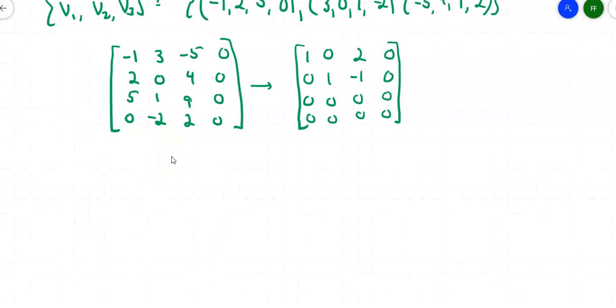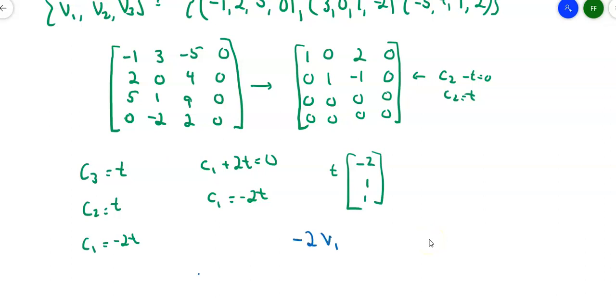What does this tell me? Well, for one thing it tells me I need a parameter. So let's let C sub 3 be T. If C sub 3 is T, then look at the row up here where you have C sub 2 minus T equals 0. That means that C sub 2 is also T. And then in the top row it says C sub 1 plus 2T is equal to 0, so C sub 1 is negative 2T. So pull out your T and you're left with (-2, 1, 1).